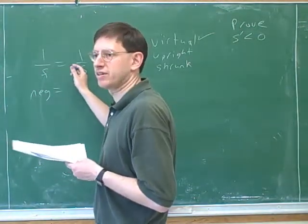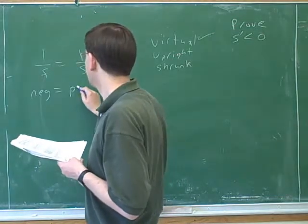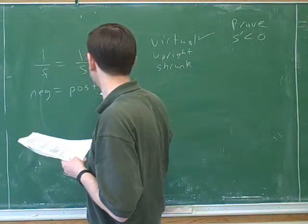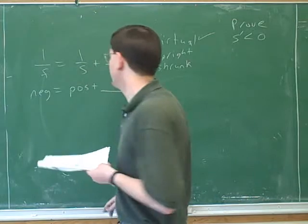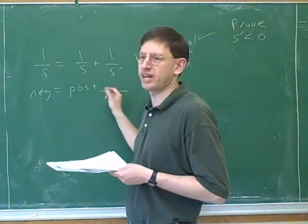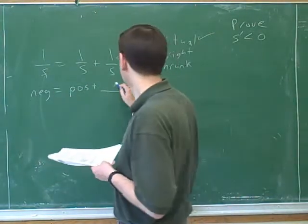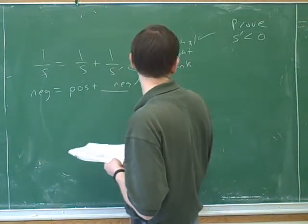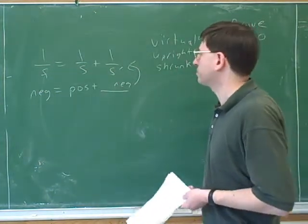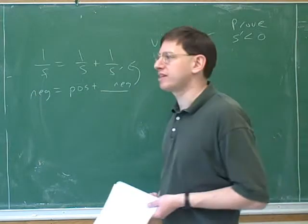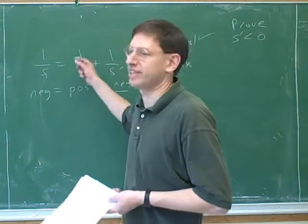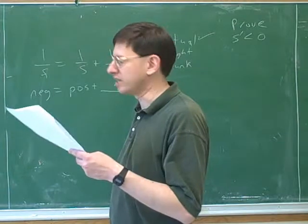Is this term negative or positive? Positive. Because the image distance is always positive for a simple problem. And then the only way that we can get a negative on the left is if there's at least one negative term on the right. And that means S prime must be negative. So that's the proof that that chart came from.